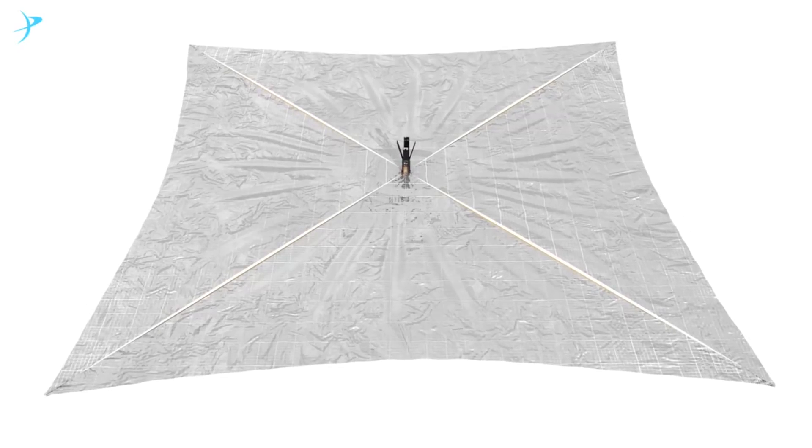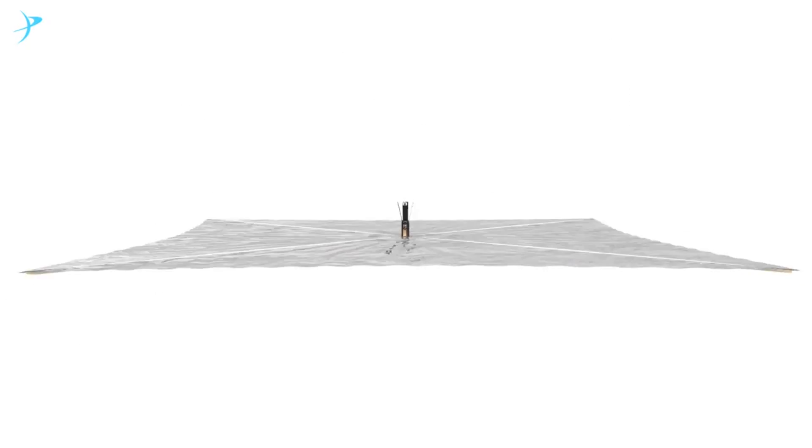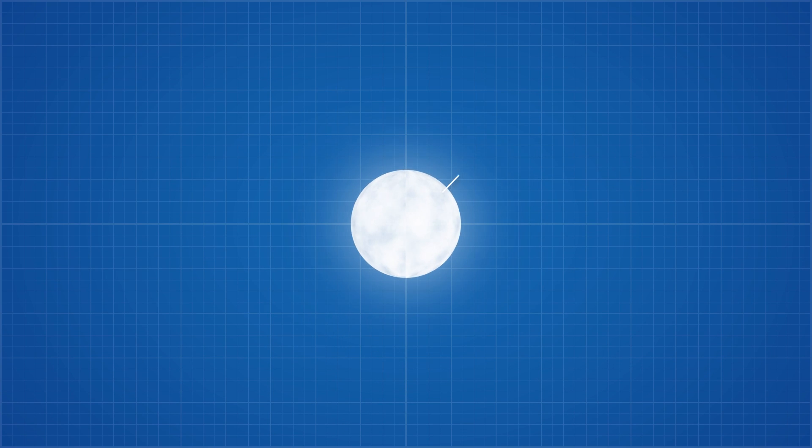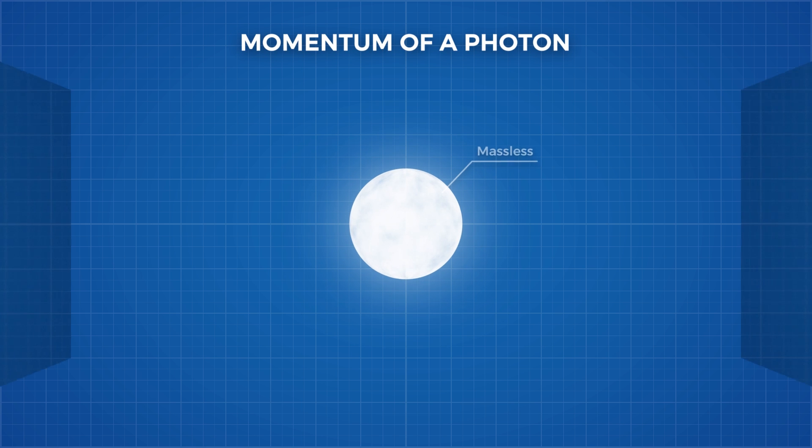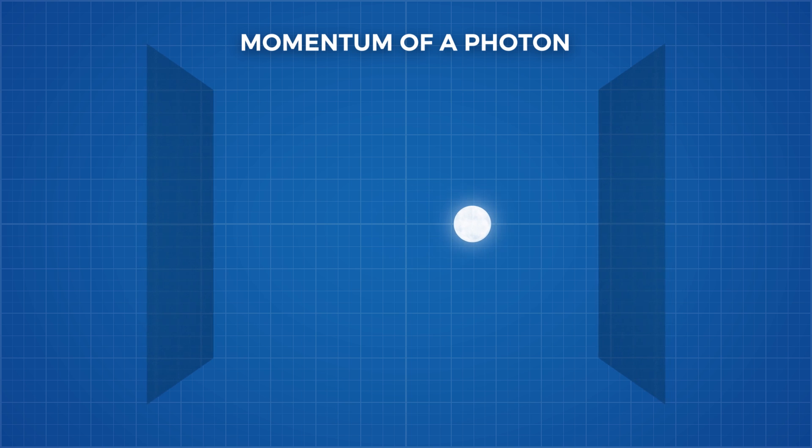Before we jump into what LightSail 2 achieved, let's first see how it works. Although photons don't have mass, they do have momentum, which can be transferred into an object with a reflective surface. This is a bit counterintuitive for anyone that has learned, like me, that momentum equals mass times velocity. So we need a new equation to describe the momentum of a photon. And here it is.